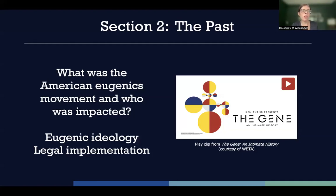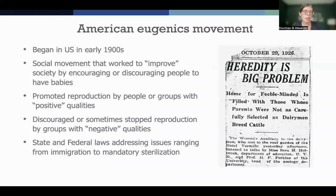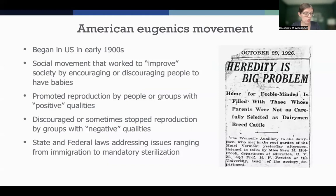What was the American eugenics movement and who was impacted? We're going to go through eugenic ideology and the legal implementation. The American eugenics movement began in the early 20th century. The main goal was to improve society and reduce the burden of people who some considered to be inferior, just as screening for intelligence and other so-called desirable traits would be acceptable to some people today — it was similarly acceptable in past decades.